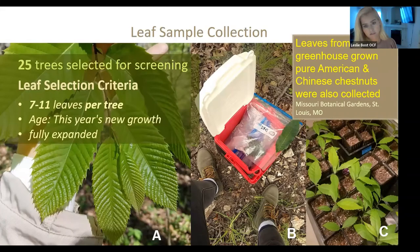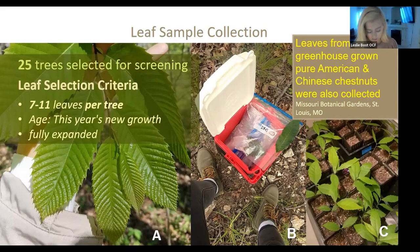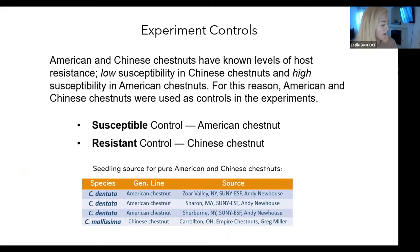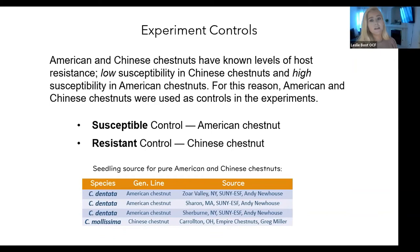From each tree I was going to screen, I collected seven to ten leaves, put them in a labeled bag, placed them in a cooler, and transported them off-site for inoculation. I also collected leaves from greenhouse-grown pure American and pure Chinese chestnuts. I inoculated those at the same time as all the Ozark chinquapin trees because American and Chinese chestnuts have known levels of host resistance - low susceptibility in Chinese chestnut and high susceptibility in American chestnut - so I used them as controls.